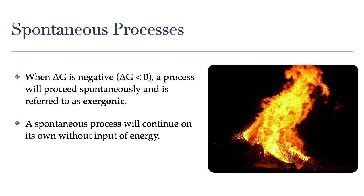Let's look at the example of a burning fire. Once the fire has been ignited, will the combustion reaction continue without a constant input of energy? Like all chemical reactions, to keep the fire going it needs a constant supply of reactants — the wood that is burning and the oxygen in the air feeding the combustion. But does it need a constant input of energy? No, it does not. A burning fire will continue to burn as long as there are enough reactants. We don't need to continuously add energy to keep the fire going. So a burning fire is spontaneous — it has a negative delta G and is exergonic.